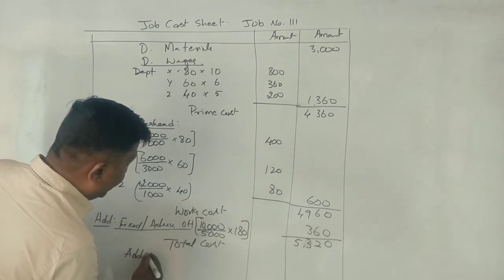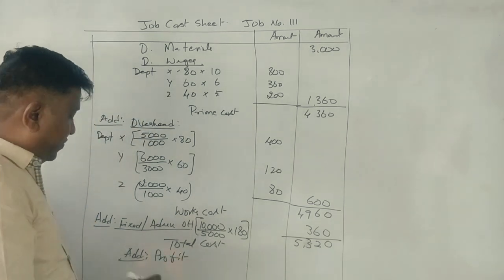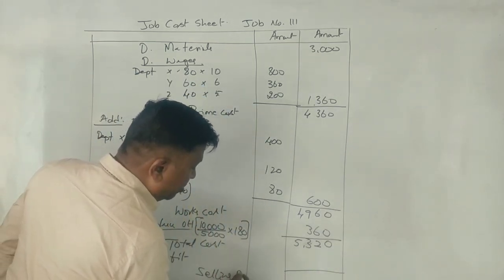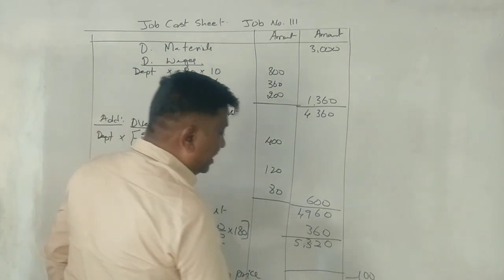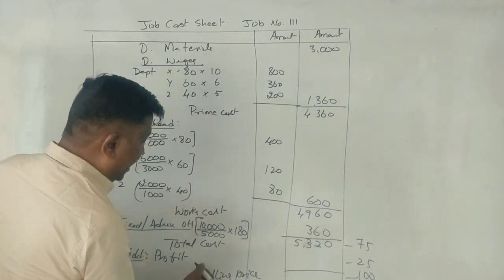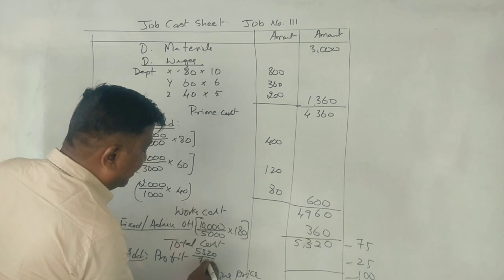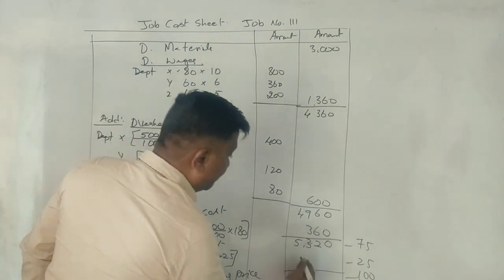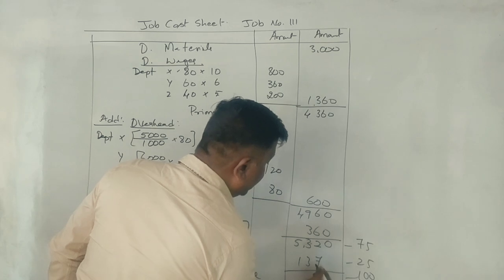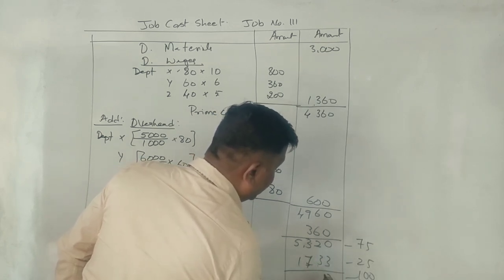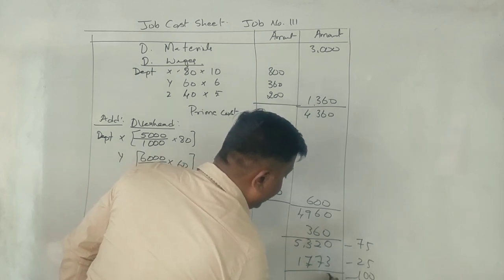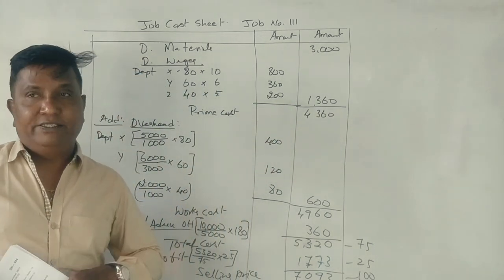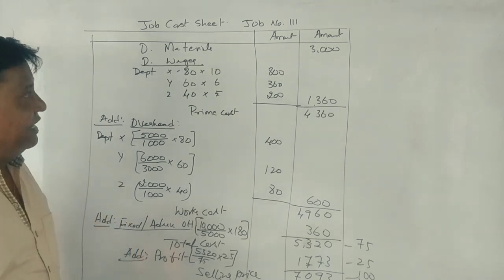Total cost 5,320. You need to get profit. This problem has 25% on selling price. Selling price, the market price. 5,320 for 75, what is for 25? 1,773. 7,093. The price.